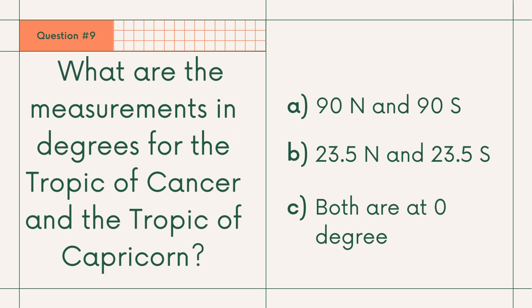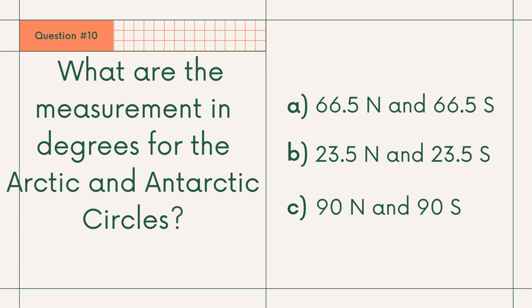Question number 9: What are the measurements in degrees for the Tropic of Cancer and the Tropic of Capricorn? A. 90 degree north and 90 degree south, B. 23.5 degree north and 23.5 degree south, or C. Both are at 0 degree. Answer: B. 23.5 degree north and 23.5 degree south.